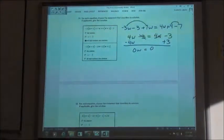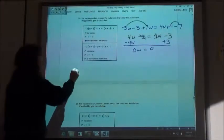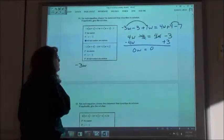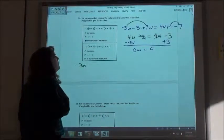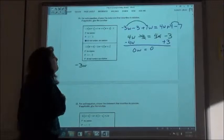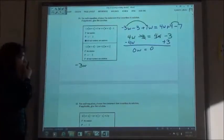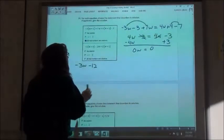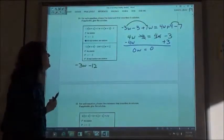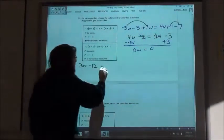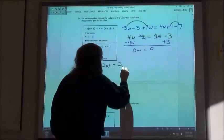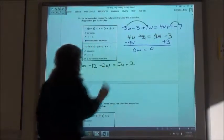All right. Next one there. This can be negative 3w. Is that going to be a positive negative 3? Oh okay. Negative 12. Yep. Equals. Oops. Negative 12. Oh minus 2w. Yep. Can't forget that guy. Equals 2w plus 2. Okay.